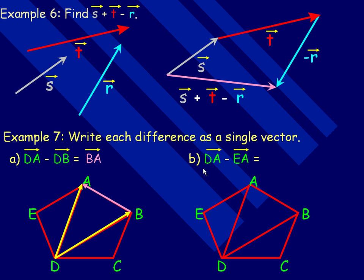In part B, we're asked to find DA minus EA. Well, there's the DA vector. There's my DA vector. Now notice in this case that DA and EA are not tail to tail. The opposite vector to EA is AE. So I can change subtracting EA into adding its opposite. It's the same idea as subtracting R by adding negative R. So I can change subtracting EA into adding AE.